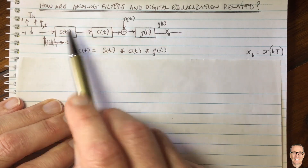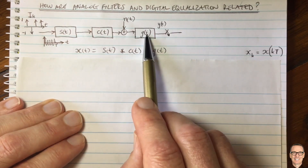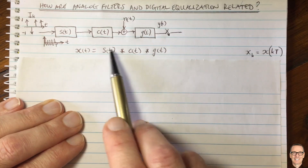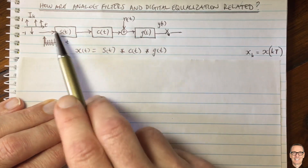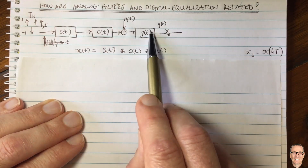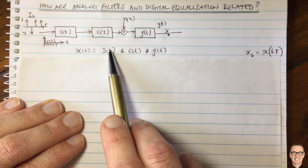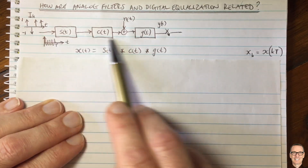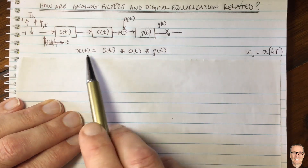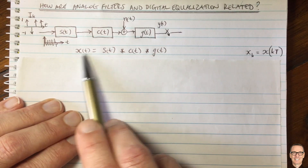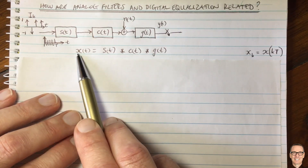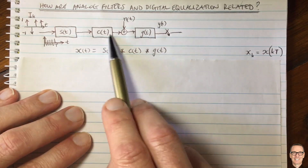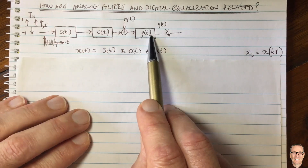We have an impulse train coming into a pulse shaping filter, into a channel, with a received filter — and these are all linear. The signal convolves through all of these, so we can represent the overall channel and filters with this overall impulse response. x(t) is the convolution of these three components.